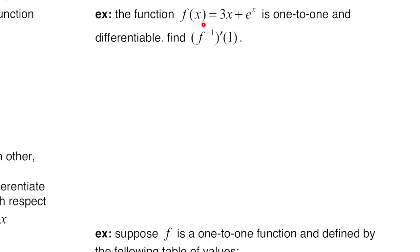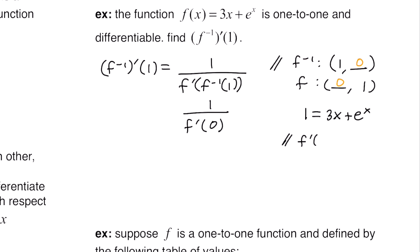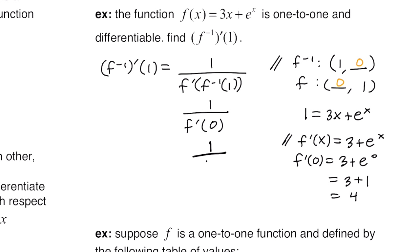This example: f of x equals three x plus e to the x is one-to-one and differentiable. Find the derivative of f inverse at one. Using the formula, it's one over f prime of f inverse of one. We need f inverse of one, so we set one equals three x plus e to the x and try x equals zero: three times zero plus e to the zero equals one. It works, so f inverse of one equals zero. Taking the derivative, f prime of x equals three plus e to the x, giving f prime of zero equals three plus one equals four. Our final answer is one fourth.